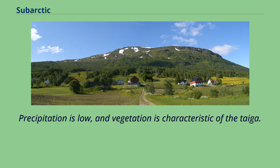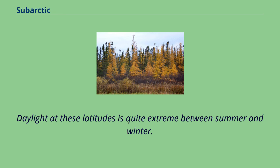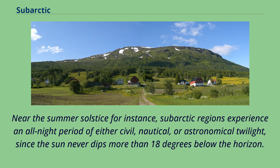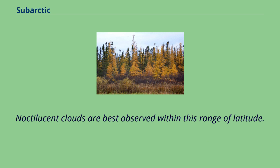Precipitation is low and vegetation is characteristic of the taiga. Daylight at these latitudes is quite extreme between summer and winter. Near the summer solstice, subarctic regions experience an all-night period of either civil, nautical, or astronomical twilight, since the sun never dips more than 18 degrees below the horizon. Noctilucent clouds are best observed within this range of latitude.